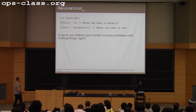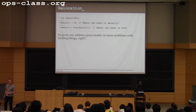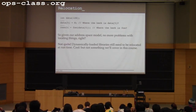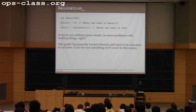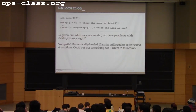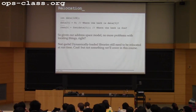Now that we have this nice address space model, at least the program knows where its own code and data are and can load them in the same place every time. However, when you dynamically load libraries you still have this relocation problem — dynamically loaded libraries can be put anywhere in the address space. When I load one I say I want it to start right here, so those libraries have to be prepared to be placed anywhere, which requires extra information included in the library.